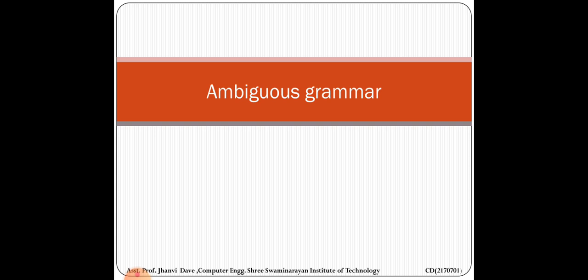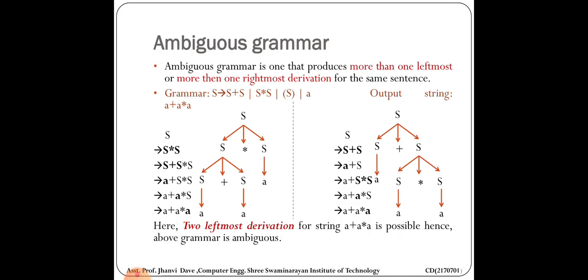After that, our today's topic is ambiguous grammar. Ambiguous grammar is something we have already studied in TOC and system programming. The simple definition is: ambiguous grammar is a grammar where, for the same grammar and same input string, we can generate more than one parse tree. Ambiguous grammar produces more than one leftmost or more than one rightmost derivation for the same sentence.